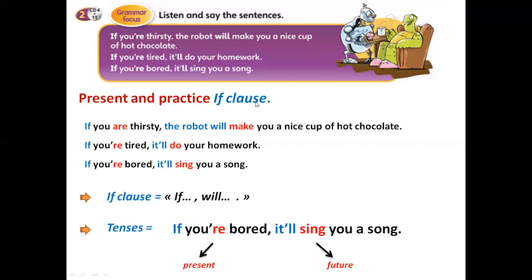Our course for today is presenting and practicing the if clause — the clause in which we use the word 'if'. In all these sentences, the first clause has 'if' with a verb in the present tense, and the second clause has 'will' with a verb, meaning future. So in the if clause we have present, and in the second clause we have 'will', which means future.